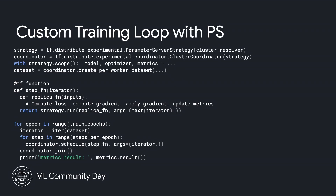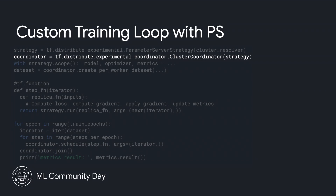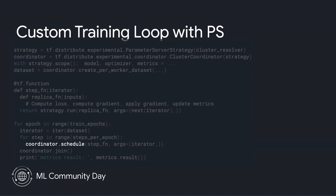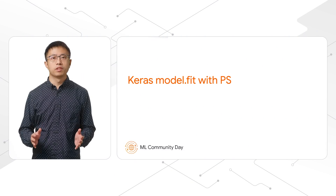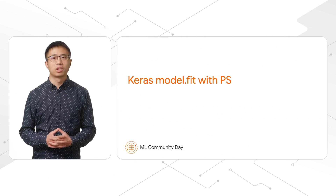To switch it to Parameter Server Strategy, we need to make some changes. We create a Parameter Server Strategy and a cluster coordinator with the strategy object. Similarly, we create a model and optimizer on the strategy scope. We create a dataset using the coordinator's create_per_worker_dataset method. We still have the step function wrapped into a tf.function, but we use coordinator.schedule to dispatch this function from the coordinator to workers. The last part is to do coordinator.join, which waits until all scheduled functions are executed. Parameter Server Strategy has also integrated with Keras model.fit.